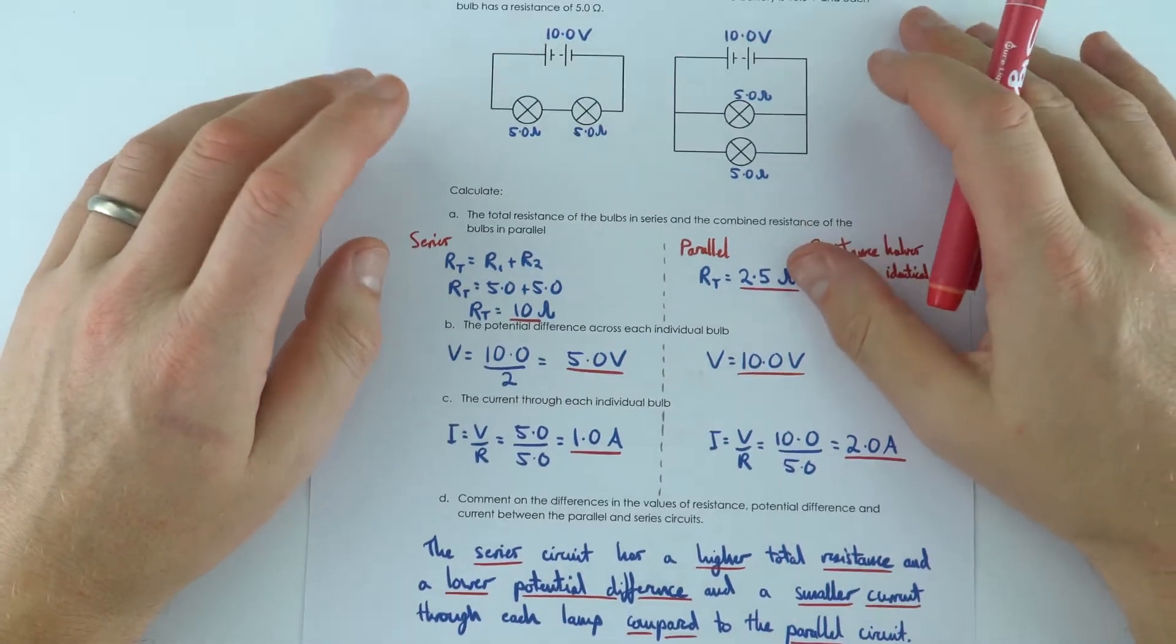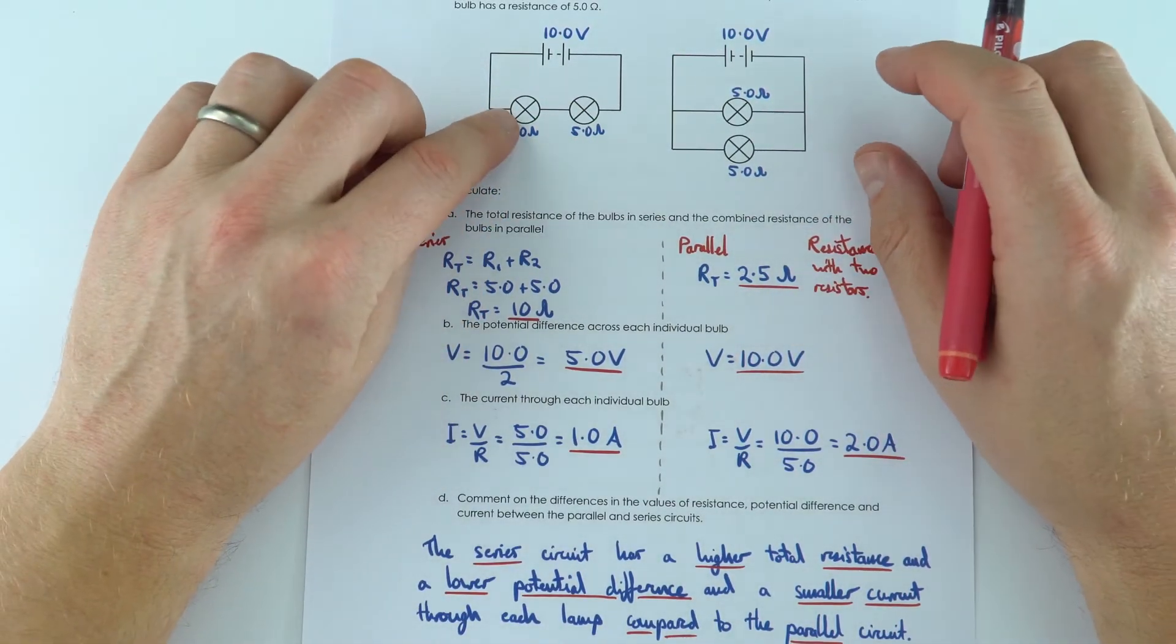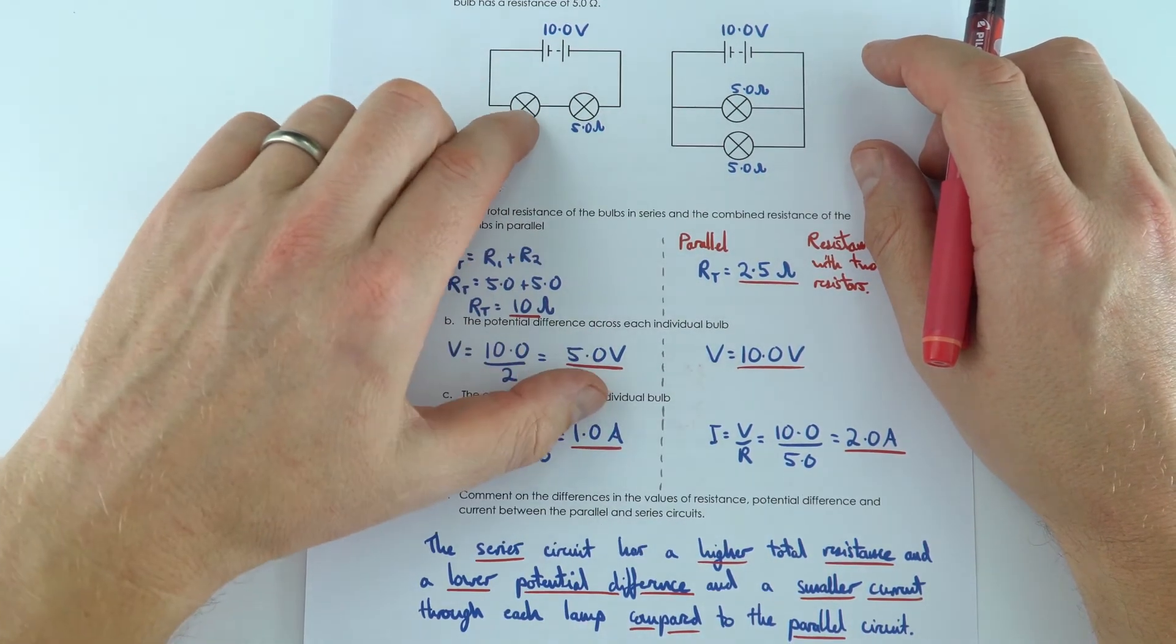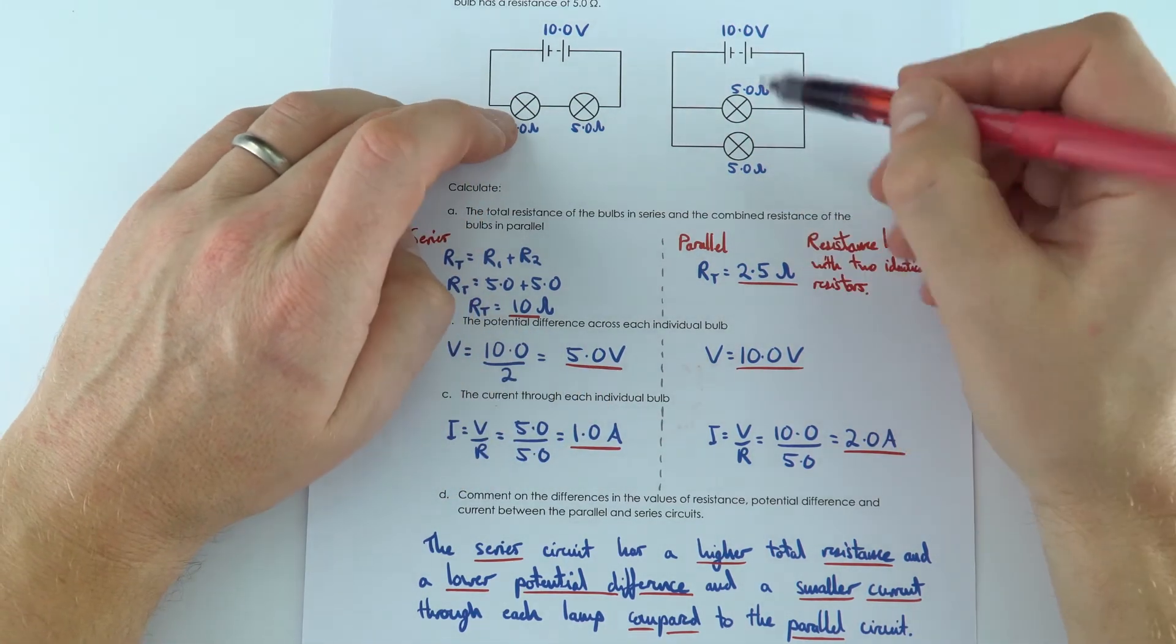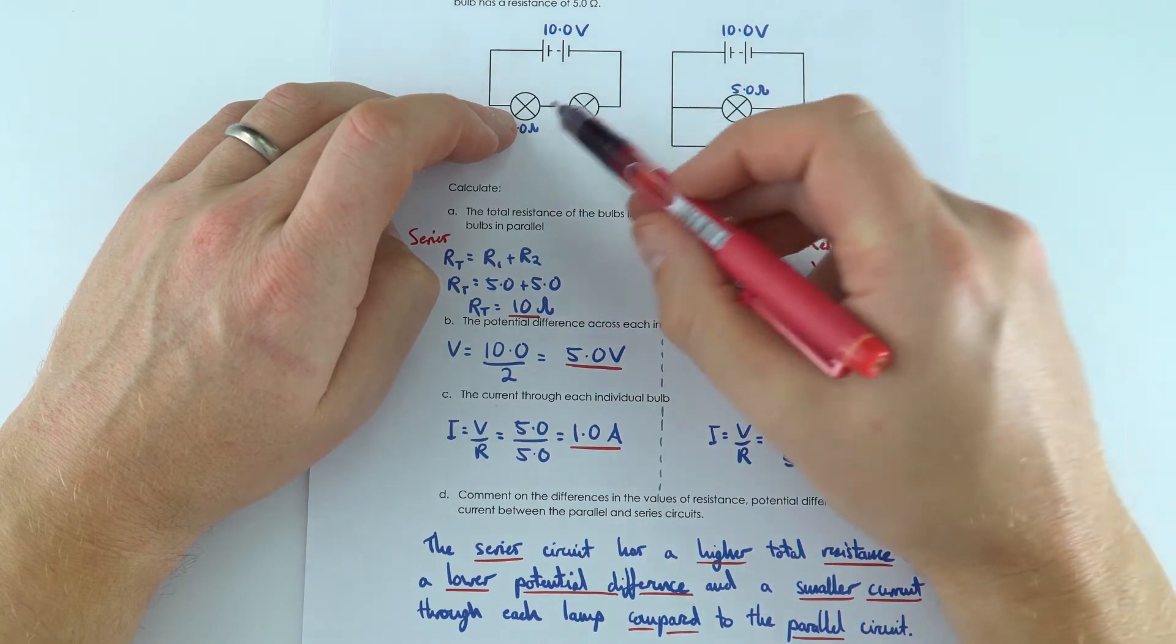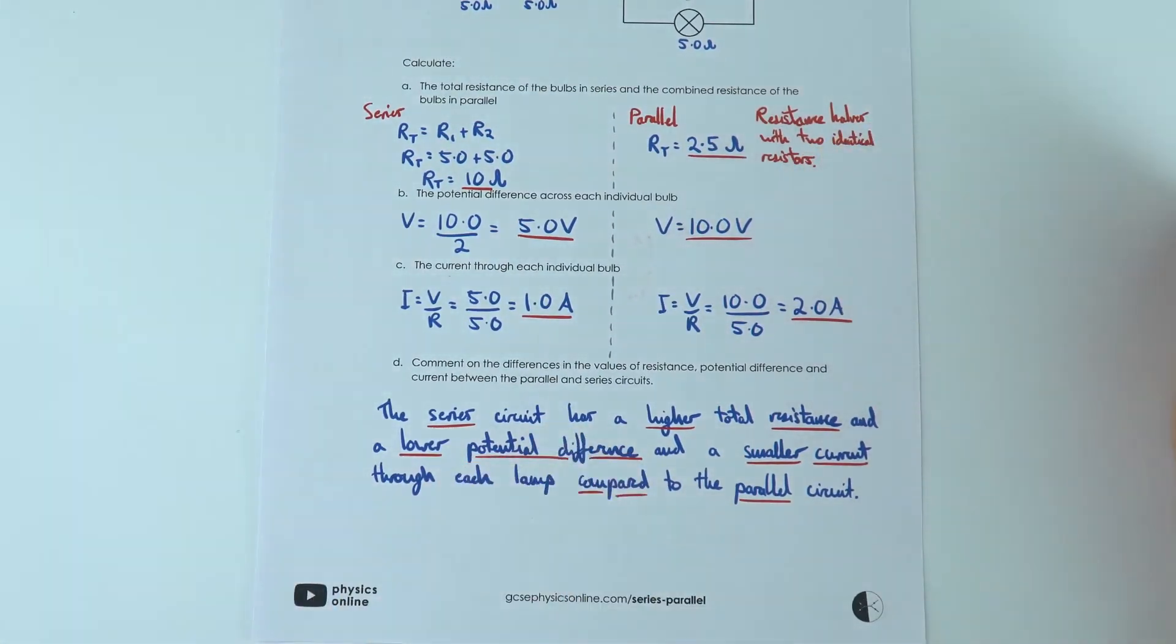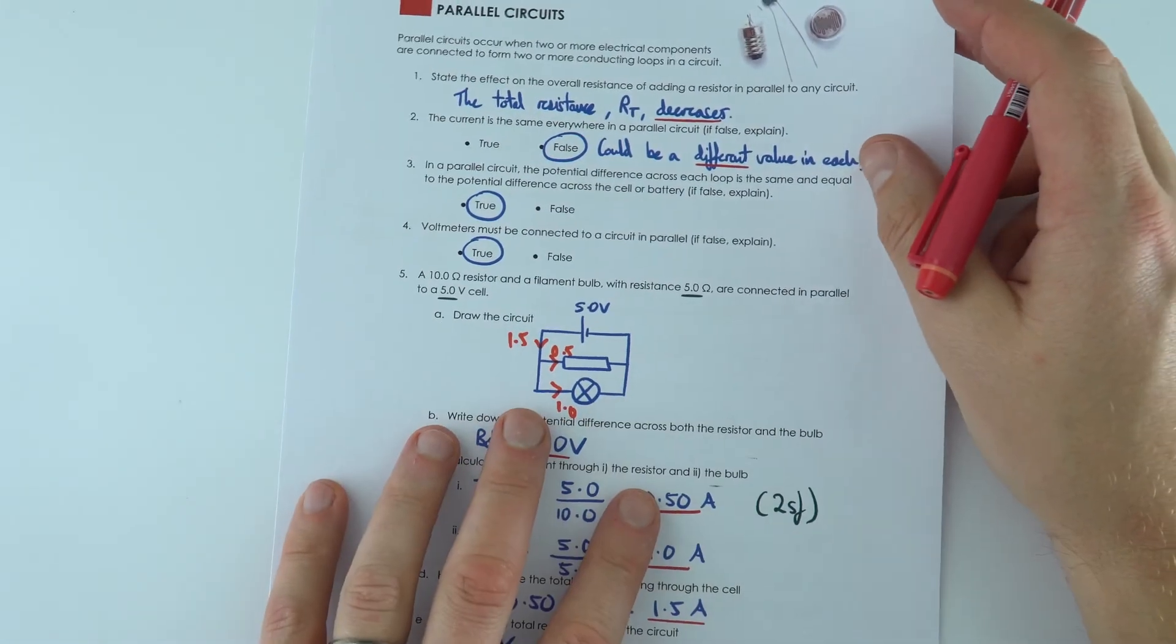So what we find is that even though we've got the same components in a series circuit, across each component we have half the potential difference and half the current compared to in parallel. And that's why in a parallel circuit these would both be really bright whereas these would both be quite dim and again I just put that in here at the very bottom on that last question. So a bit more introducing you to parallel circuits.